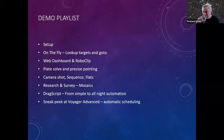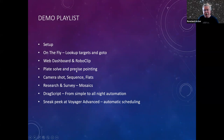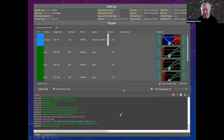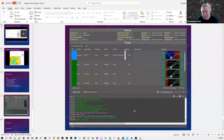Let's do a demo. I'll go through setup, a little bit of on-the-fly where you can do things from the dashboard, look at the web dashboard and RoboClip, show you plate solve and precise pointing, camera sequences, a research-and-survey function built in for things like planet transits, and then scripting. If we have time, Voyager Advanced. I'm using the SkyX with its simulators because it has nice simulators that will even download a JPEG from the DSS database and simulate plate solving — so we'll be able to see Voyager run even though it's daylight.